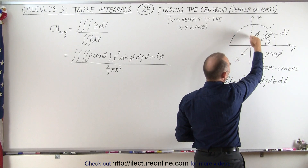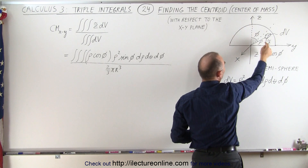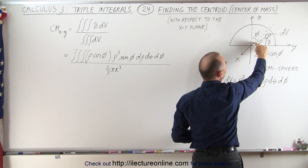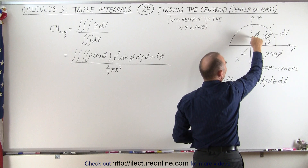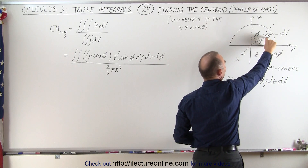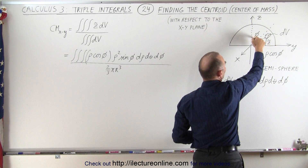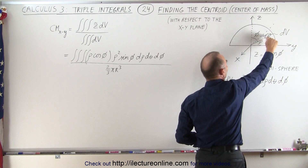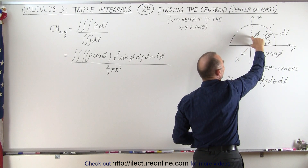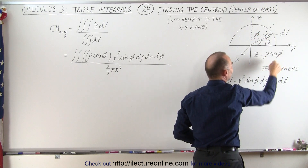If we reference that to the angle phi with respect to the z-axis, then this angle here is equal to this angle right here. Moving that across, we can see that z is adjacent and rho is the hypotenuse. So the height z can be expressed in terms of the angle phi as rho times the cosine of phi.